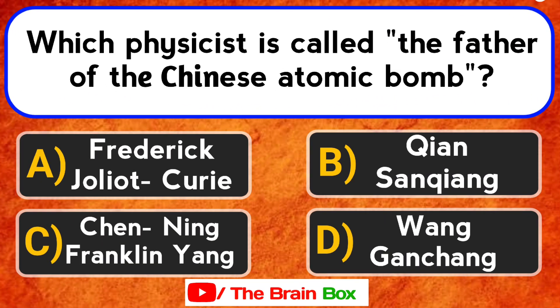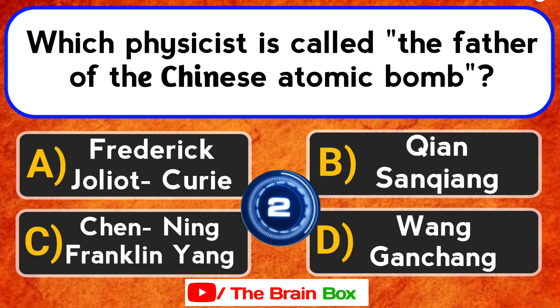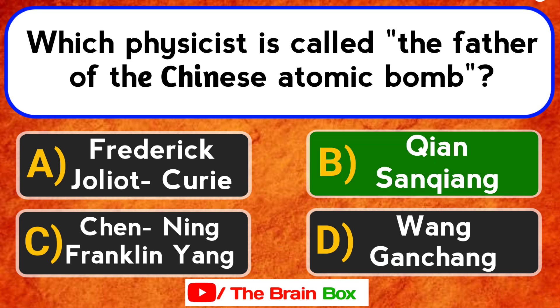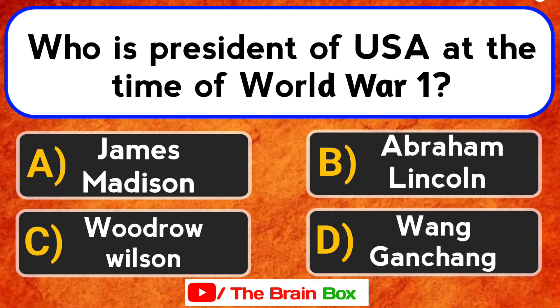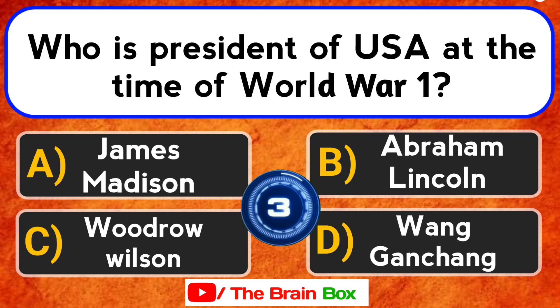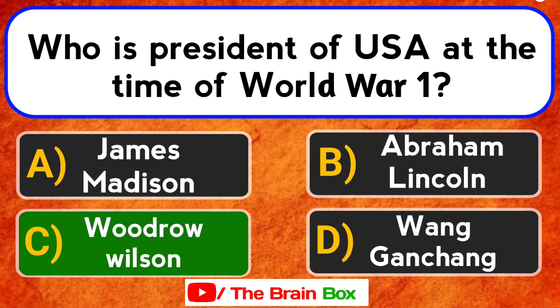Question number six. Which physicist is called the father of the Chinese atomic bomb? Your options are: Option A, Frederick Joliet. Option B, Abraham Lincoln. Option C, Woodrow Wilson. Option D, Wang Gancheng. The right option is Option C, Woodrow Wilson.